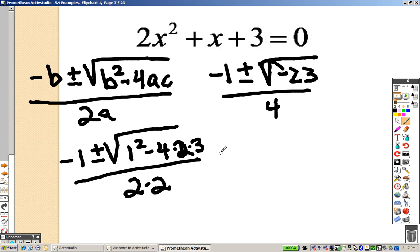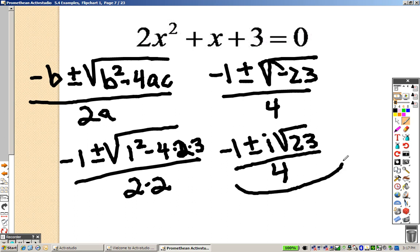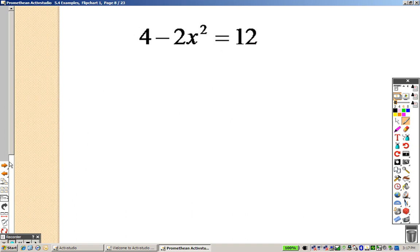And remember, just pull it out. Negative 1 plus or minus i root 23 over 4. And you can't simplify that any farther. That is a prime number already. So, there is your answer. And when we come back here, I will try to finish off some more of these problems with some roots and complex numbers.